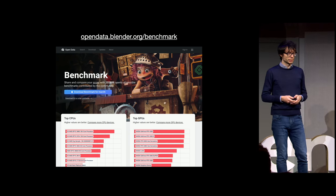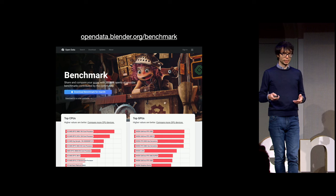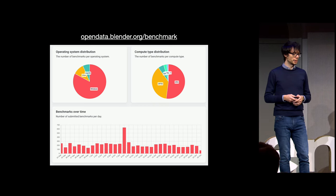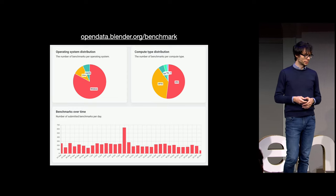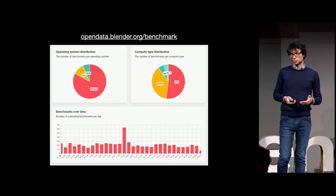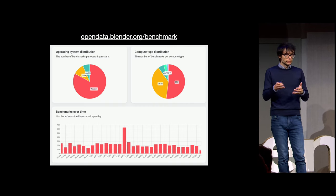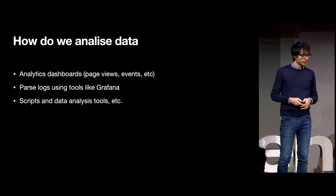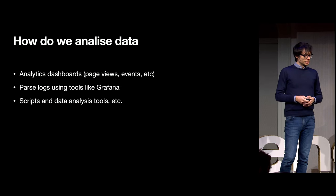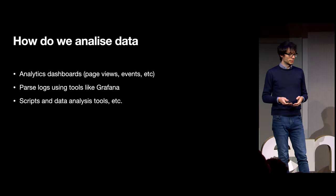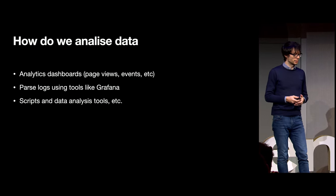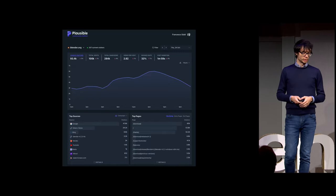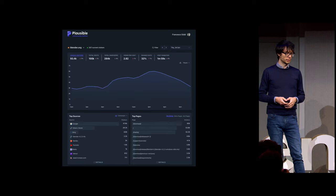Or we collect it from people that are willingly submitting it. For example, the open data platform with the Blender benchmark is a system where people can send their data over and we can display it. The website collects around 200 submissions per day, and it's useful for having an idea of how certain CPU or GPU architectures work across Blender releases. For analysis, we use analytics dashboards with page views and events, we parse logs with tools like Grafana, and we write our own scripts and tools. This is an example of an analytics dashboard for Blender.org, and another aggregating data from Blender's projects.